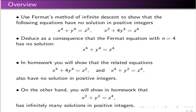So here's an overview. We'll use Fermat's method of infinite descent to show that the following two equations are linked, and we will establish that there are no solutions in positive integers to both of these equations. We'll deduce as a consequence that the very famous Fermat equation with n equaling 4 also has no solution in positive integers.